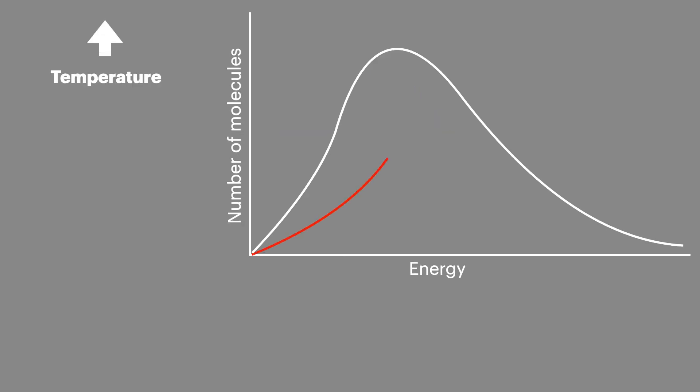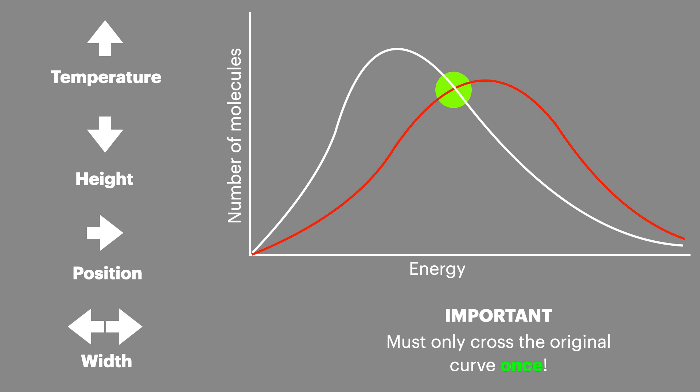If we increase the temperature of the molecules this also alters the shape of the curve. The curve becomes lower in height and its position is shifted to the right. The peak of the curve becomes wider or broader and like before the new curve should only cross the old curve once. However, the position it crosses is now different.